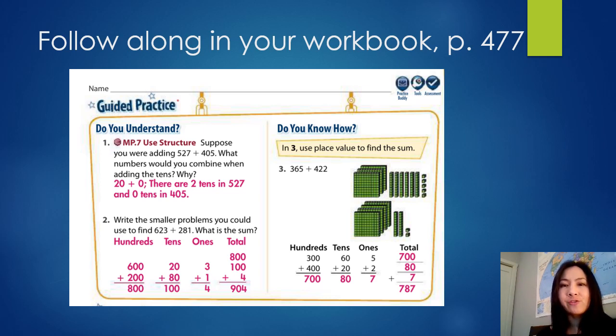Keep following along in your workbook. This is on page 477. Now what I have displayed on the screen here is the guided practice. As you can see, there are already the answers filled in. And I'm convinced that this will still be a helpful way for you to learn how to do these kinds of problems before you do the independent practice. So for number one, suppose you were adding 527 plus 405. What numbers would you combine when adding the tens? Why? So you need to look at the digits that are in the tens place in these two numbers. All they're asking is which numbers would you combine, put together. So 20 from the 2 in 527 plus 0 from the 0 in 405. So you would write that 20 plus 0. And to answer the question why, you'd write, there are two tens in 527 and 0 tens in 405.